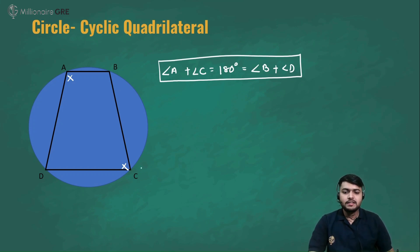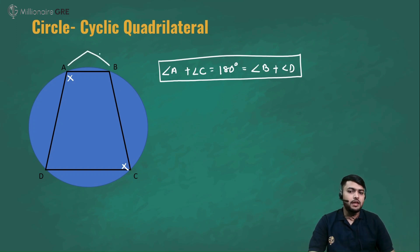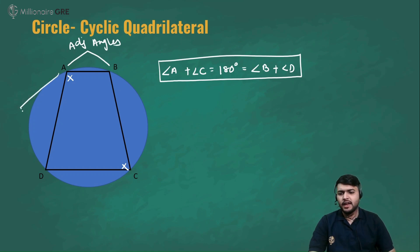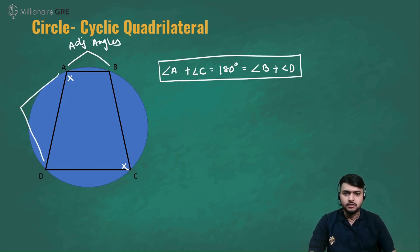A and C are opposite angles. But A and B are called adjacent angles. Similarly, A and D are also adjacent angles.